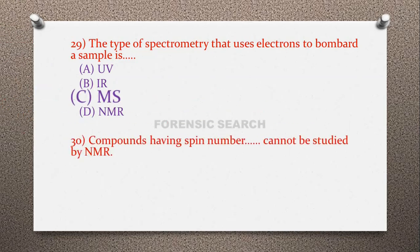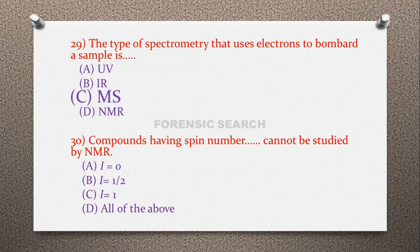Question 28: Compounds having which spin number cannot be studied by NMR? Option A: I = 0, option B: I = 1/2, option C: I = 1, option D: all of the above. The correct answer is option A — compounds having spin number I = 0 cannot be studied by NMR. However, compounds having spin number I = 1/2 and I = 1 can be studied by NMR.